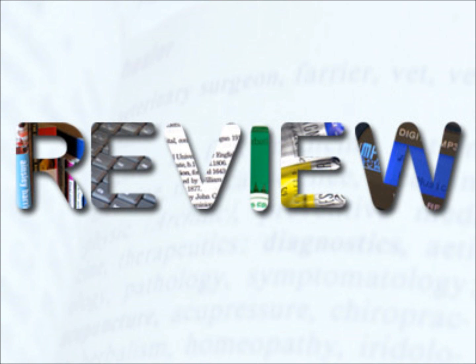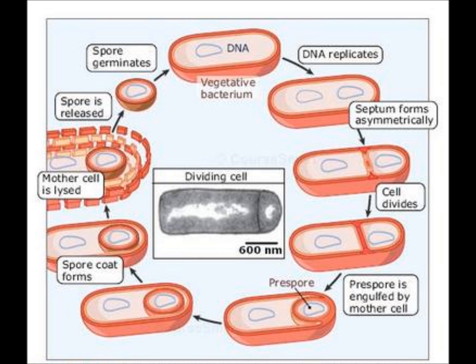As a final review, let's briefly go over the steps one more time. As a cell goes into the sporulation cycle, it first goes through asymmetric cell division, where a septum is formed between the forespore and the mother cell. Then the mother cell engulfs the forespore and the two membranes now surround it. A spore coat forms around the forespore, creating an endospore. The endospore matures and eventually the mother cell lyses, and the endospore is free to germinate.